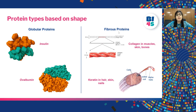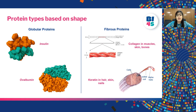Examples of fibrous proteins include collagen and keratin. Collagen is present in muscle, bones and skin — it forms the connective tissue and gives strength to our body. It has a triple helical structure and many such molecules join to form collagen fiber, which is strong enough to support our body. Keratin is present in our hair, skin and nails. These are coiled molecules made up of two alpha helices.